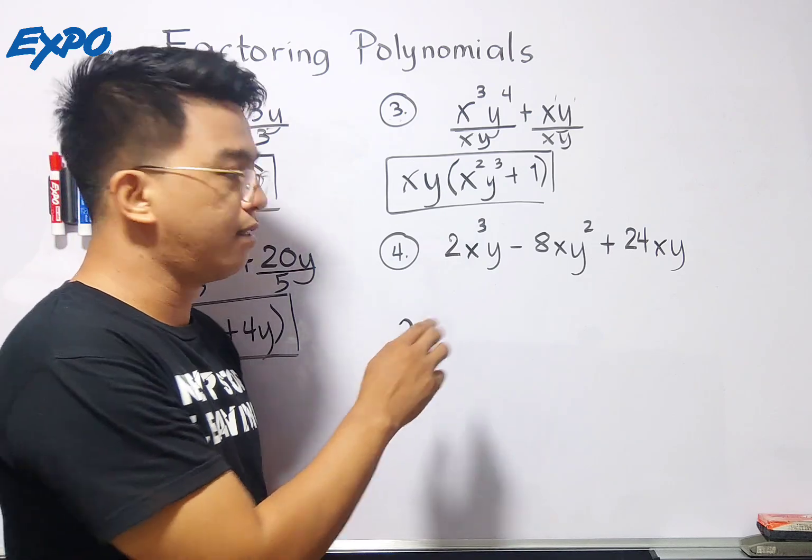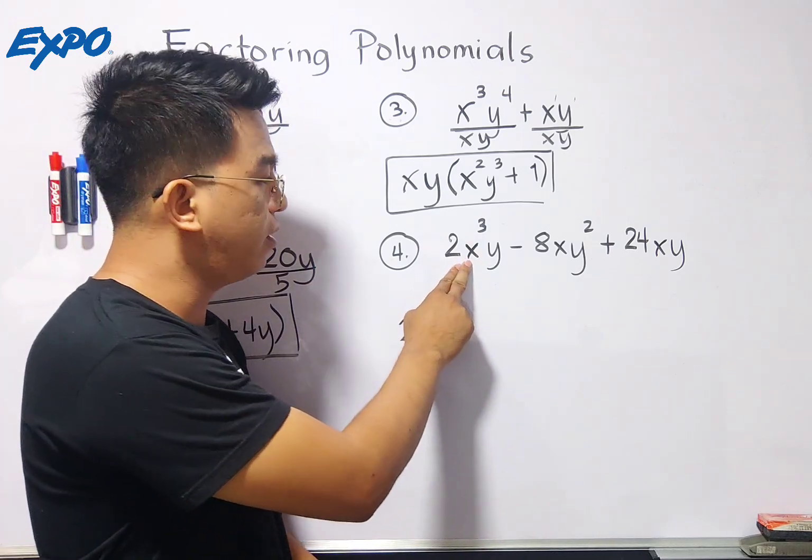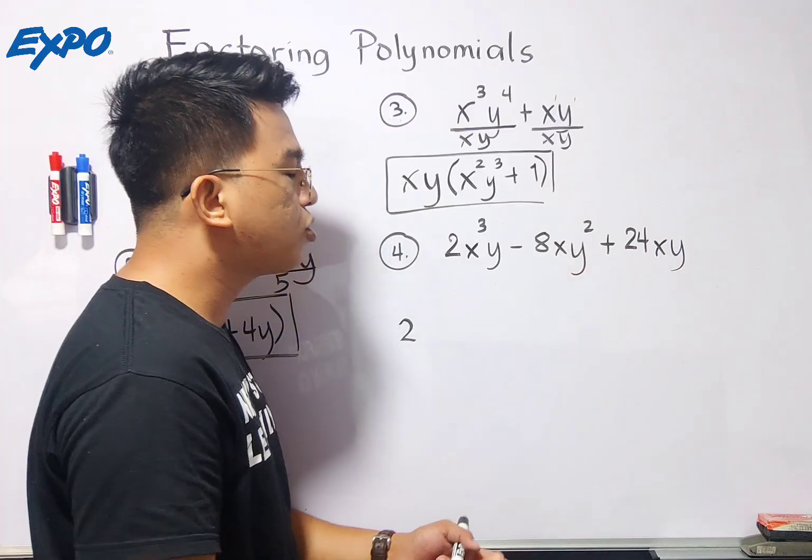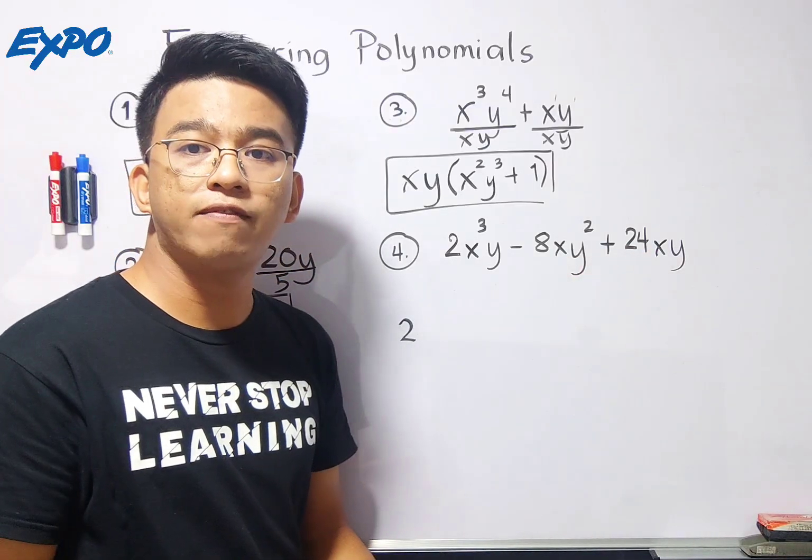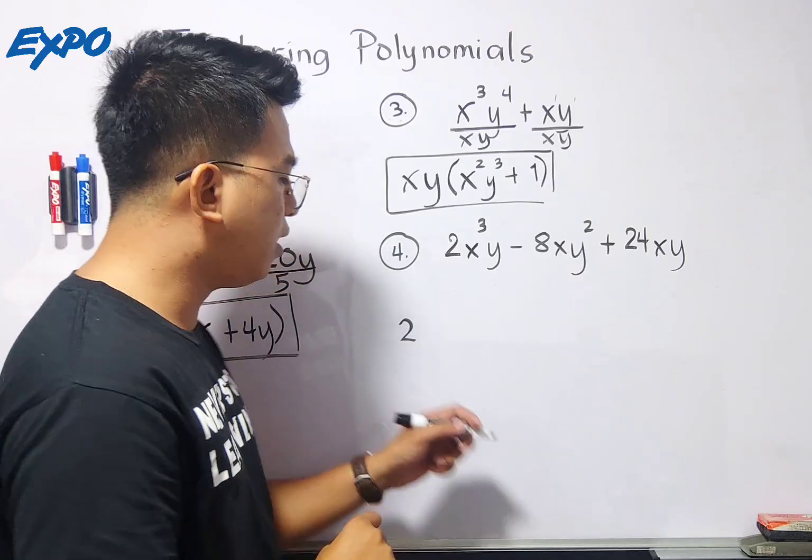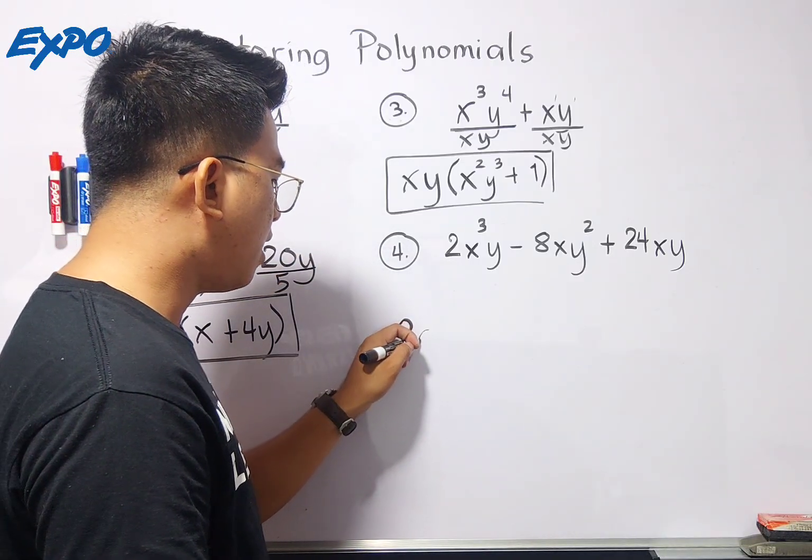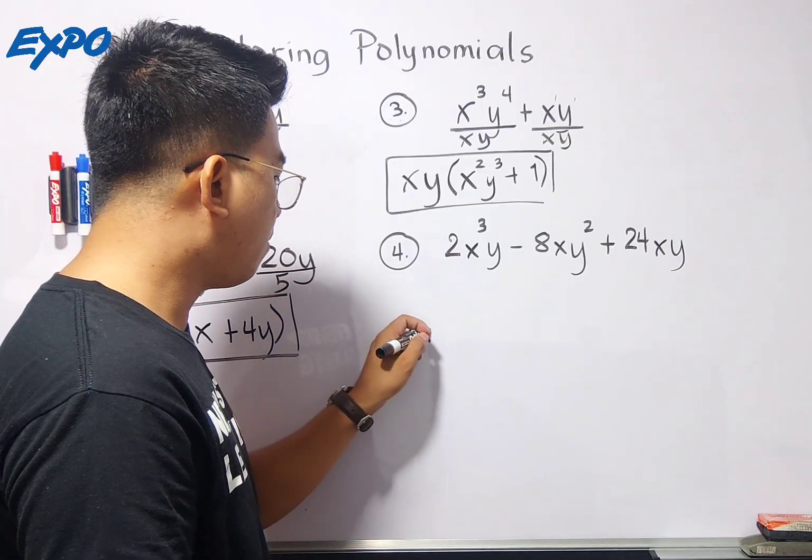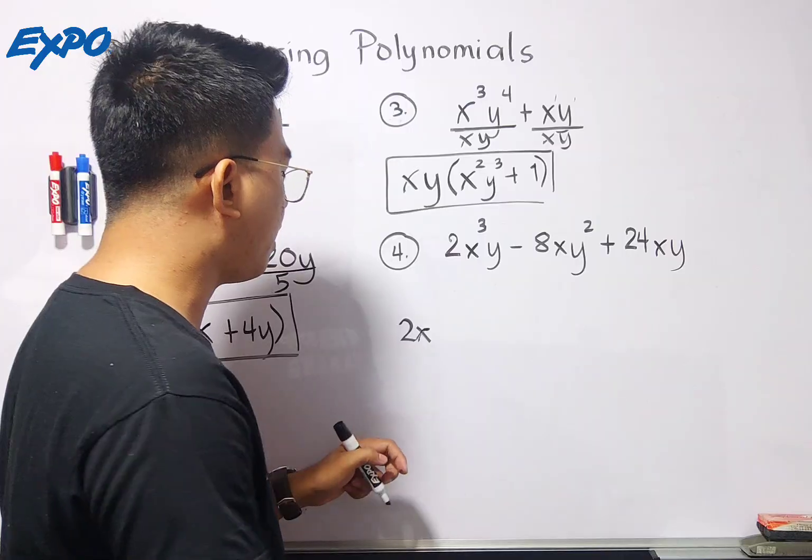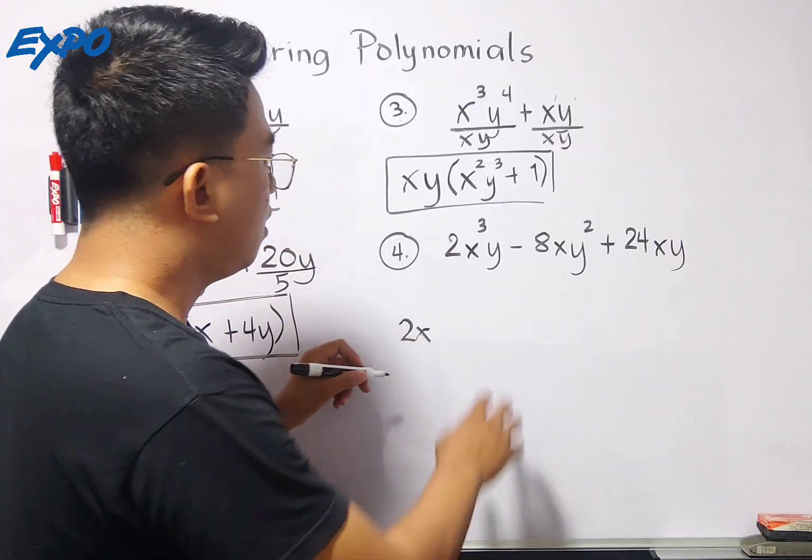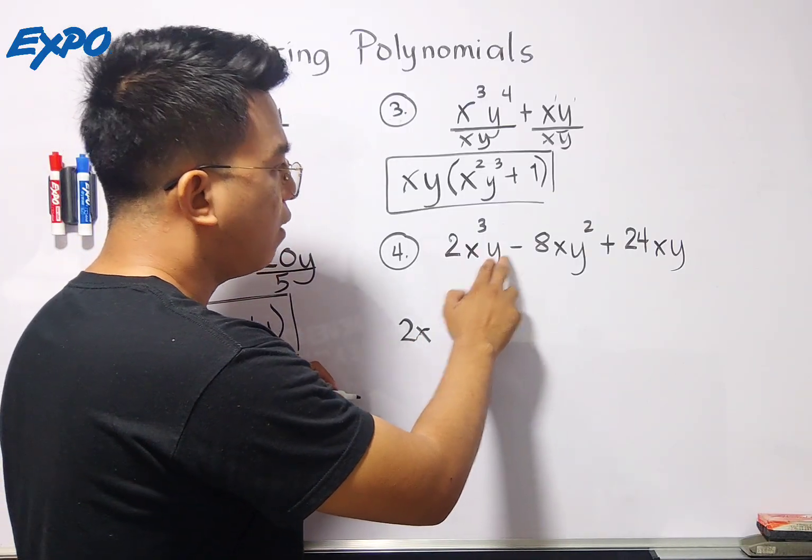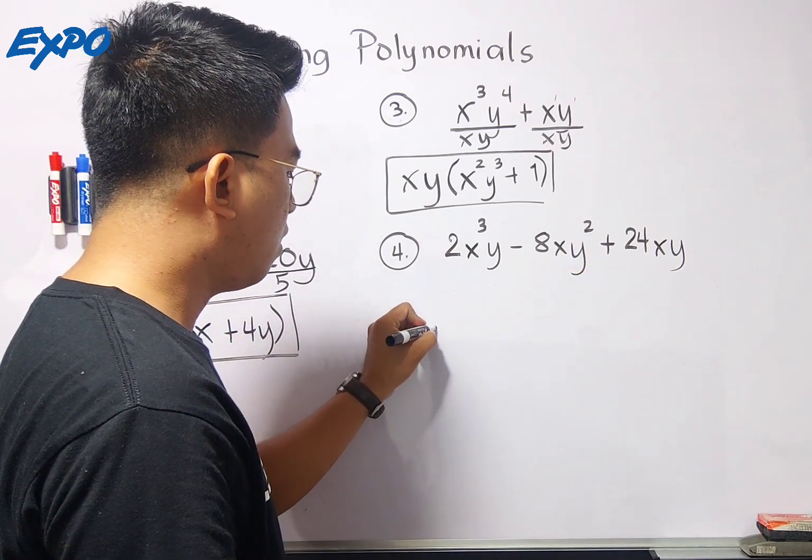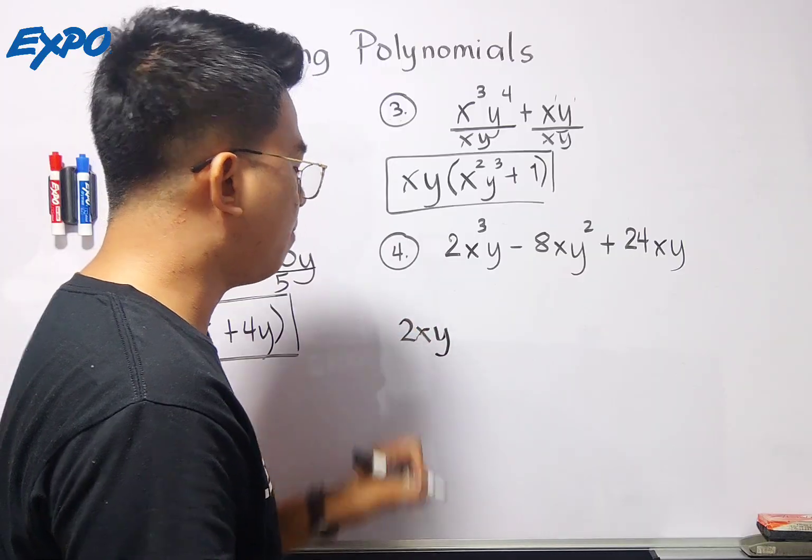And what about the variables? Observe the variable x. For the first term, you have x cubed, x squared, and x in which the least exponent of variable x is simply 1. Meaning, for the variable x, our GCF is simply x. Okay? What about the variable y? For the variable y, observe. Okay? We have here y, y squared, and y. Meaning, our GCF for the variable y is simply y.